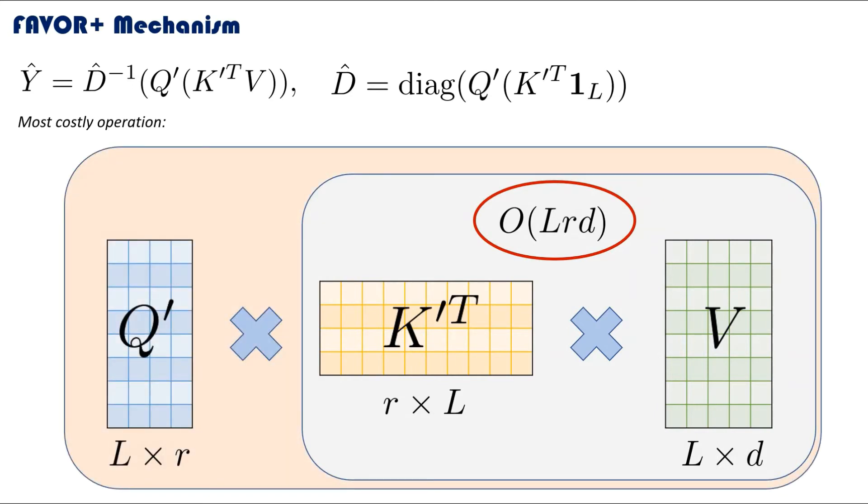And voila, this is the FAVOR+ mechanism that has approximated the traditional attention mechanism. And we can see that now we only have a linear order of complexity with L, i.e., the number of input words. Hence we can expect the Performer to perform a lot faster for long sequences.